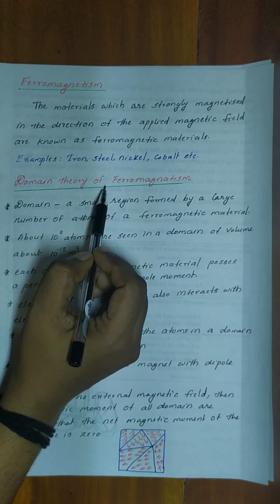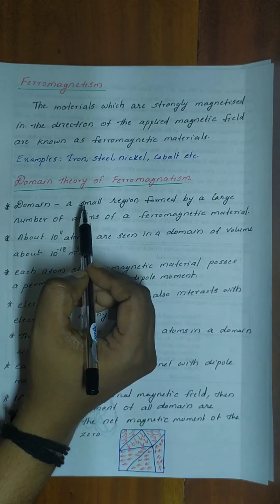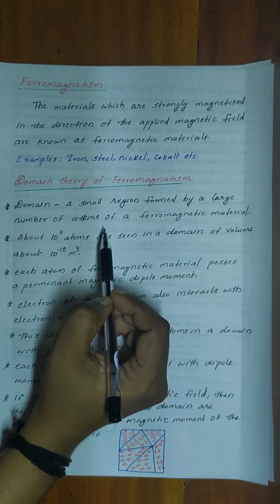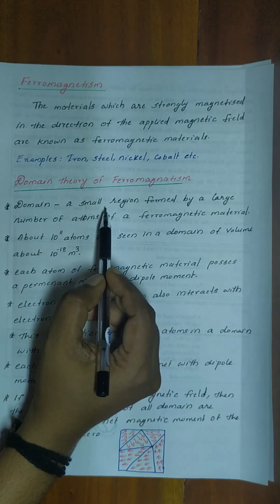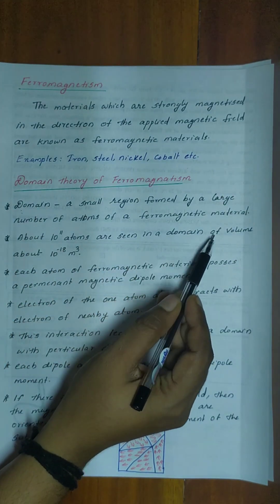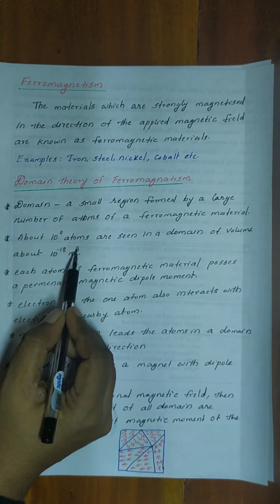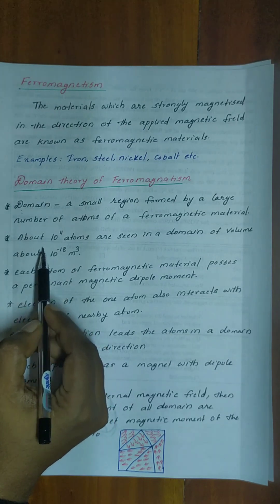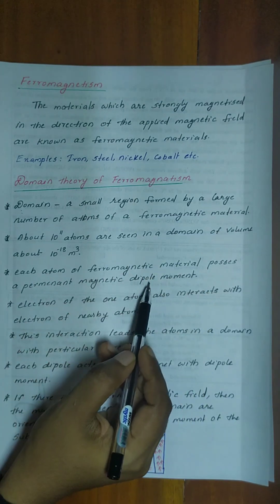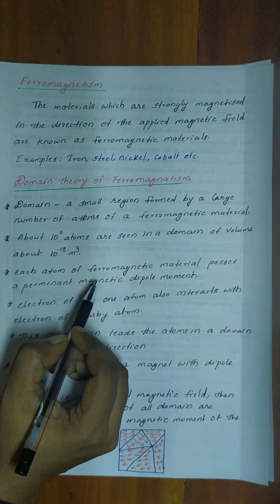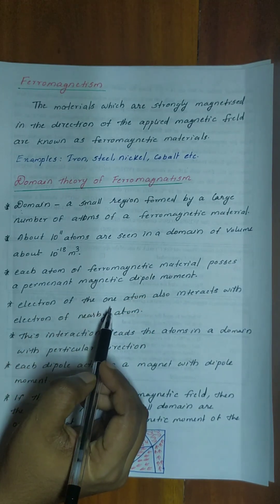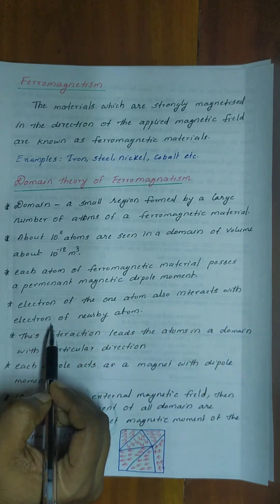Now let's discuss the domain theory of ferromagnetism. A domain is a small region formed by a large number of atoms of a ferromagnetic material. About 10 to the power of 11 atoms are seen in a domain of volume about 10 to the power of minus 18 meter cube. Each atom of ferromagnetic material possesses a permanent magnetic dipole moment.